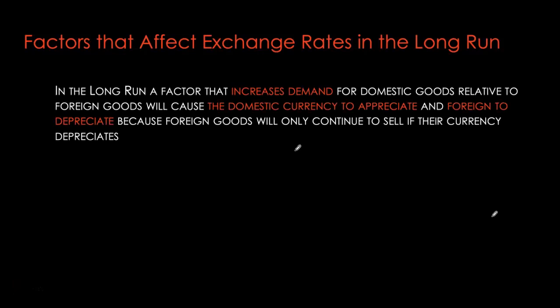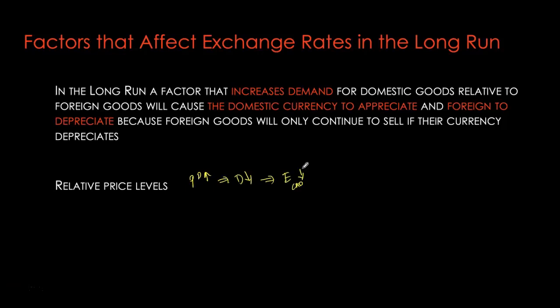For behavior of exchange rates in the long run, the simple rule of thumb is that any factor that increases the demand for domestic goods relative to foreign goods will cause the domestic currency to appreciate and the foreign currency to depreciate. Let's look at some factors that affect the demand for our domestic goods. The first is the relative price level, which is in line with our PPP theory: if the domestic price level goes up, it will decrease the demand for our domestic goods because they are now relatively more expensive. With lower demand, the domestic currency is expected to depreciate and the foreign currency is going to appreciate.